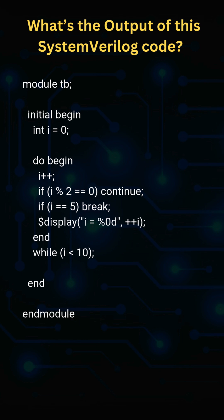When i reaches 5, the break statement stops execution and the loop ends. In $display, ++i increments i again before printing.